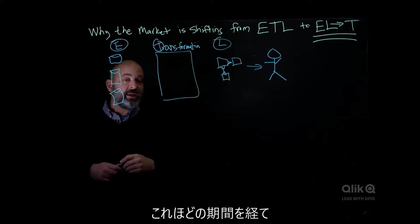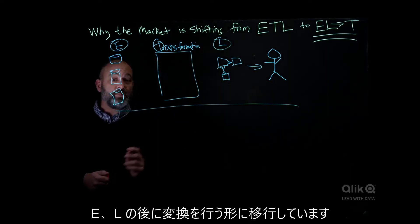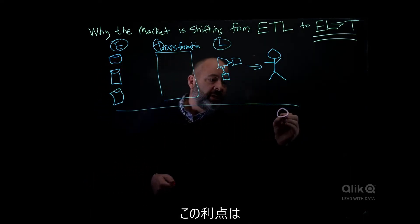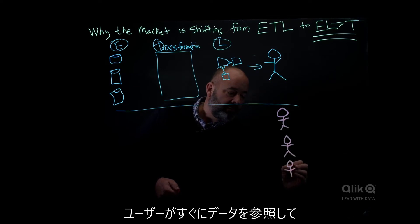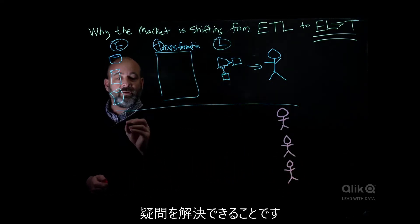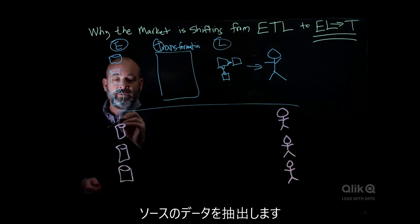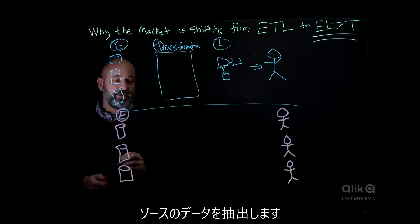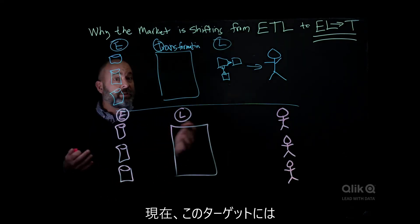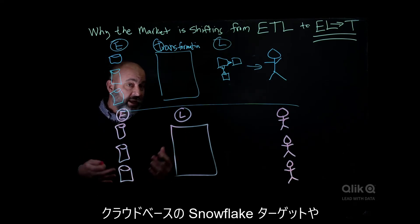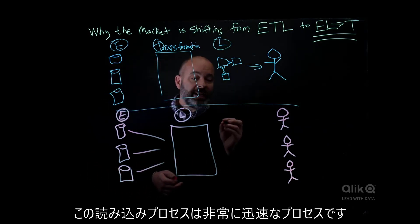The consumers are able to maybe answer that question. As the market is shifting over to ELT with the transform decoupled, the beauty here is you have multiple consumers. These multiple consumers can really get a look at that data very quickly. The process initially looks similar to ETL — they're going to extract that source data. But now they're actually going to load that data into a target, typically a cloud-based Snowflake target, Synapse, BigQuery — take your pick.